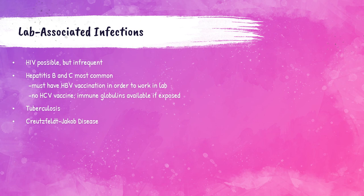Possible infections from working in the laboratory include HIV, which is possible but infrequent. HIV attacks the body's immune system and can lead to AIDS. There is no cure, but recent treatments allow patients to live long healthy lives. Hepatitis B and C are the most common laboratory-associated infections — viruses that primarily affect the liver. Most labs require workers to have a Hepatitis B vaccine series; there is currently no Hepatitis C vaccine, but exposed workers can be given immunoglobulin medication.